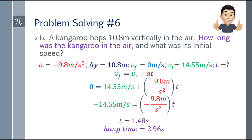Now that we know the initial velocity, we can find time using the fifth formula: final velocity equals initial velocity plus acceleration times time. Substituting: 0 equals 14.55 plus negative 9.8 times t. Solving, time equals 1.48 seconds.